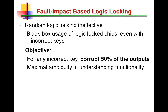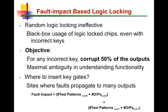In fault analysis-based logic locking — FLL for short — the idea is to corrupt 50% of the outputs, inserting key gates to ensure this 50% corruption is delivered. Why 50%? When half of the outputs are corrupted and this half differs from one input to the next, it creates maximal ambiguity for the attacker trying to understand the black-box behavior of the chip. This is based on fault analysis: we identify the locations of stuck-at faults that are most influential in propagating to the outputs, and we insert the key gates in those locations.